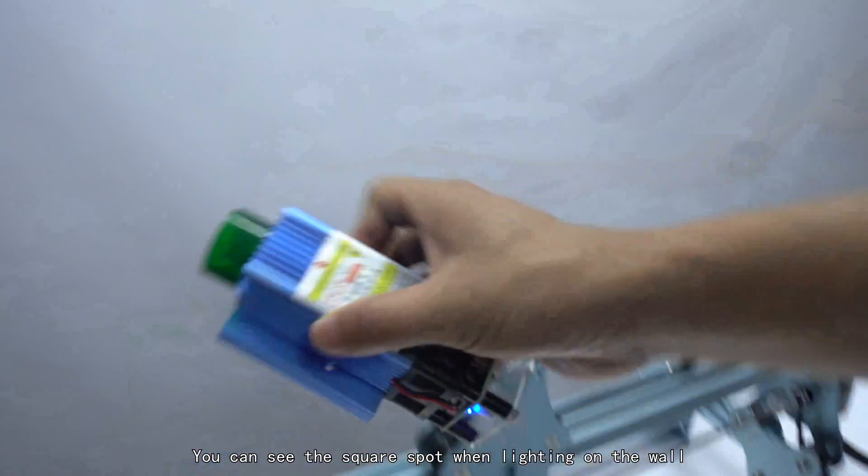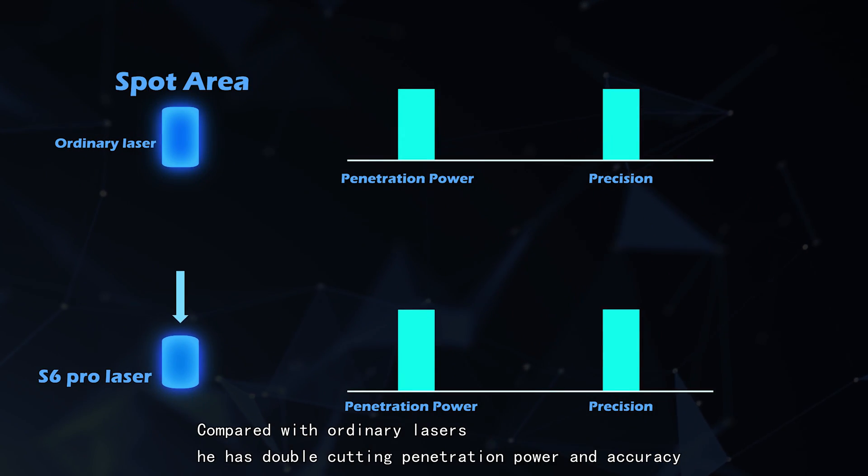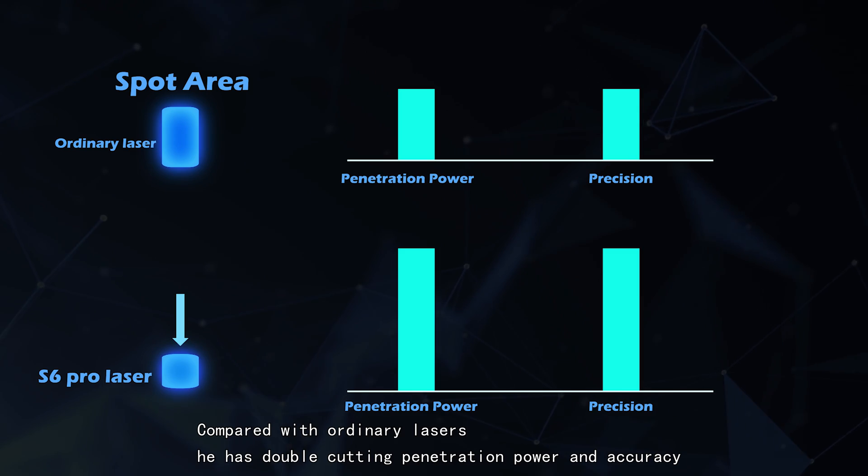You can see the square spot when lighting on the wall. This is the compressed spot technology. Compared with ordinary lasers, it has double cutting penetration power and accuracy.